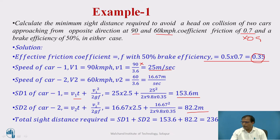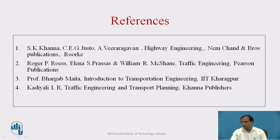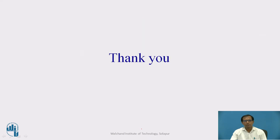To get the total sight distance, we add SD1 of car 1 and SD2 of car 2, giving a total stopping sight distance of approximately 236 meters on the road. These are the references used for preparing this presentation. Thank you.